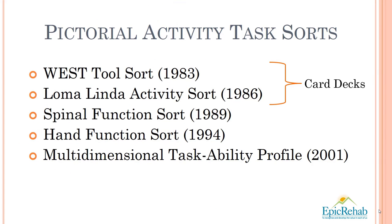MTAP is the most recent version of a series of pictorial activity task sorts developed by the U.S. Spine and Sport Foundation in San Diego, California, led by Dr. Vert Mooney. MTAP uses the pictorial activity task sort approach to measurement of functional capacity evaluation that began with the West tool sort and the Lomalind activity sort in 1983 and 1986.